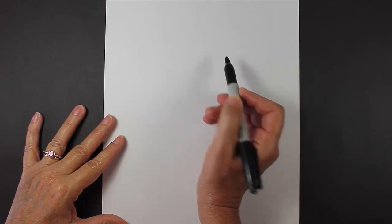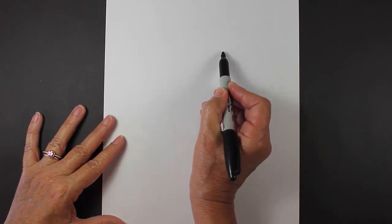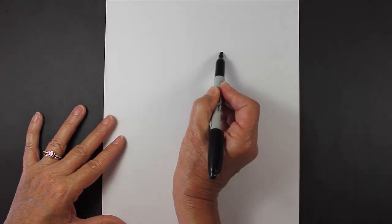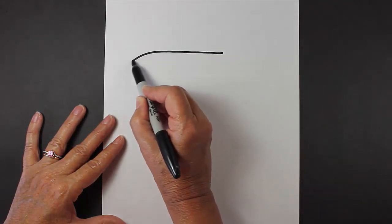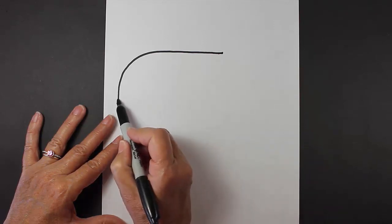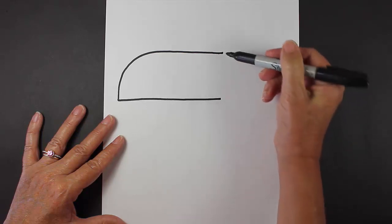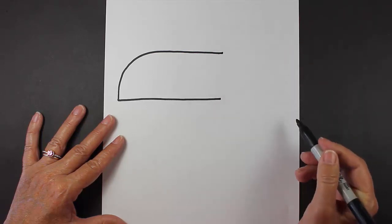The first thing that you'll want to do is make the toucan's bill, and they have really big bills. So the way that we do that is we're going to make a straight line with a curved line at the end. Now we're going to make a straight line coming back, and it's going to be about even with the initial line that you made.